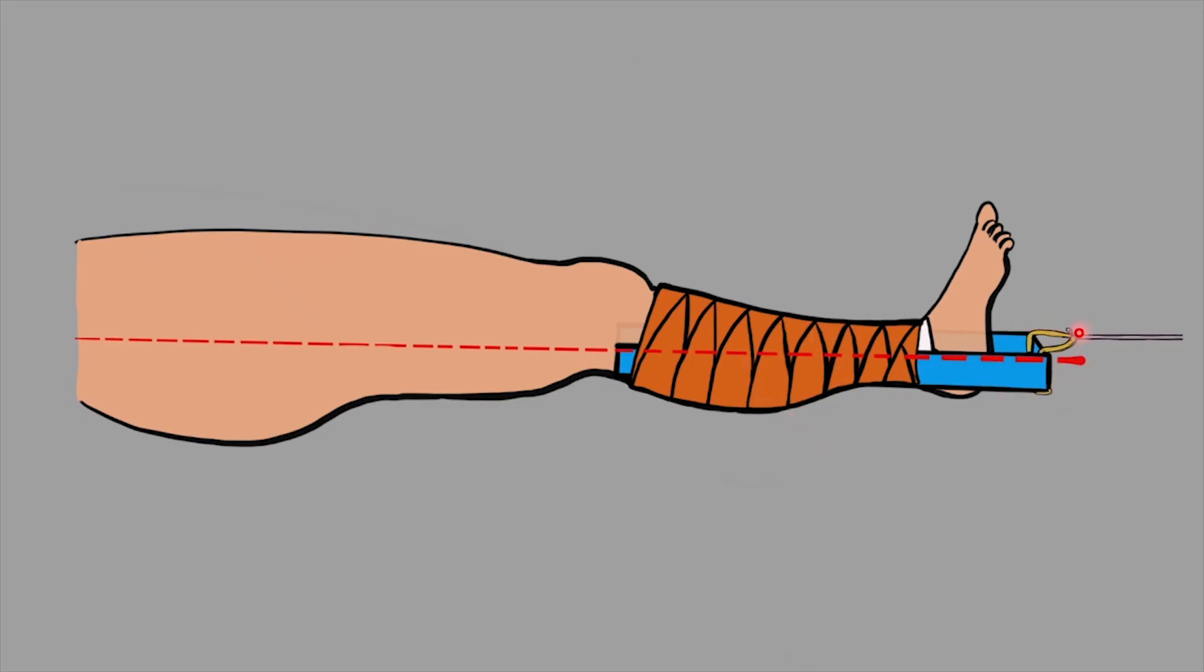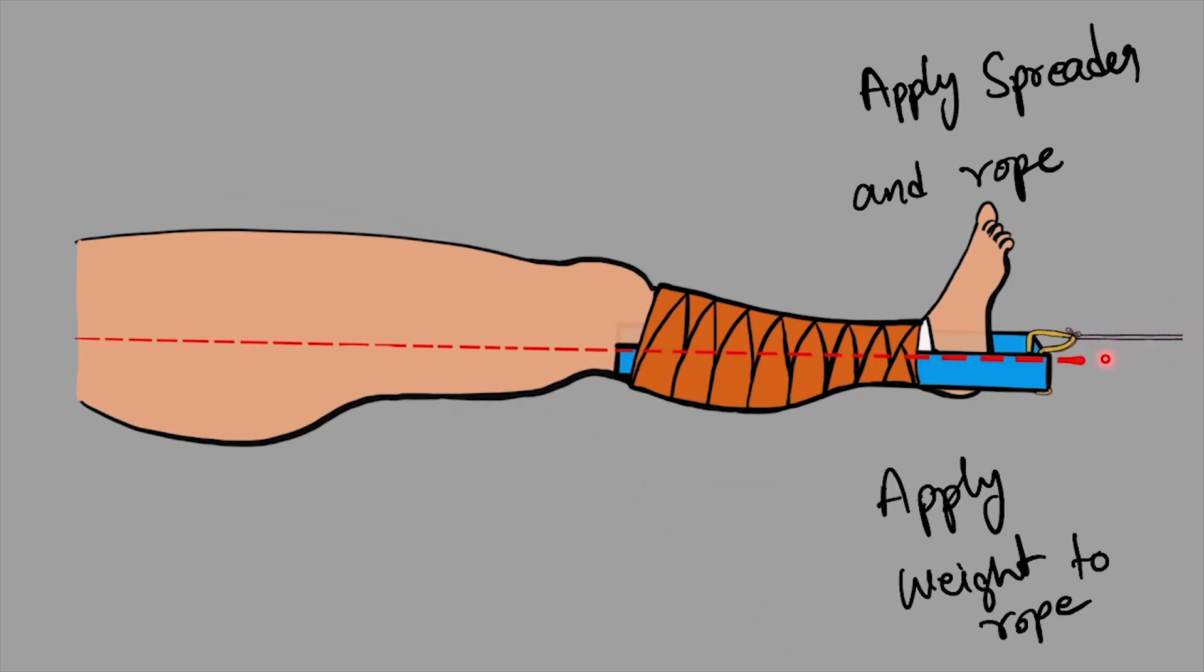A spreader should be applied to the loop that we have formed, and a rope is tied to this spreader. Then we apply weight to this rope to give traction to the lower limb. A maximum of 10 pounds of weight should be applied using this traction. This traction is also known as box traction.